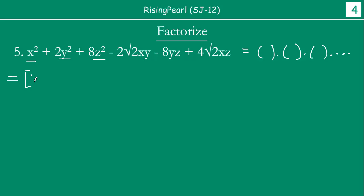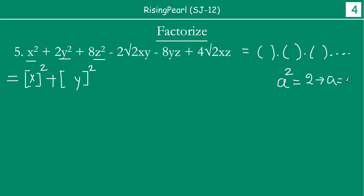The first term we can write as x square. Now this becomes interesting — you have 2y square. We want to write this as some (a·y)² form. Let us say this is 'a', where a squared is equal to 2. If you take the square root on both sides, a becomes √2, because √2 × √2 = 2. So 2y² can be written as (√2·y) whole square.